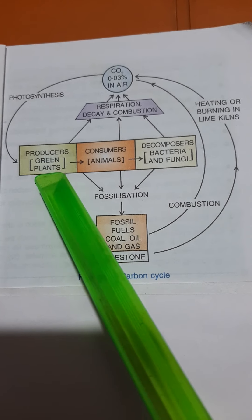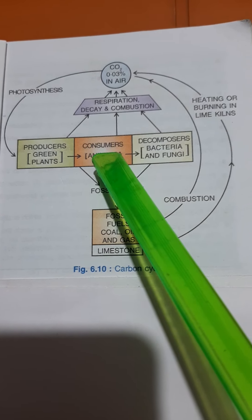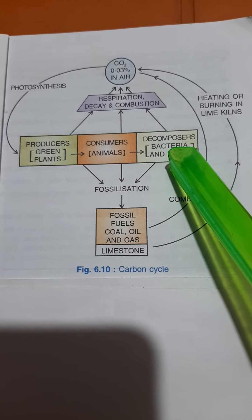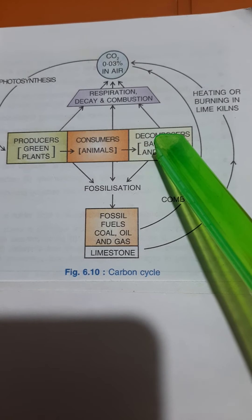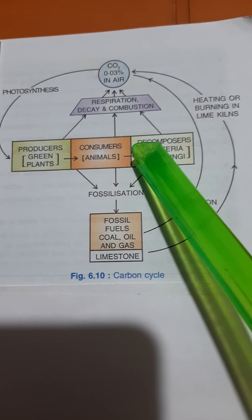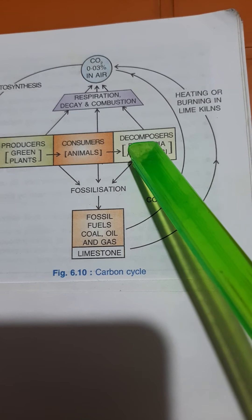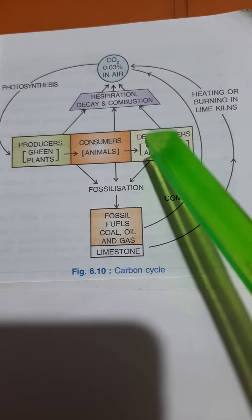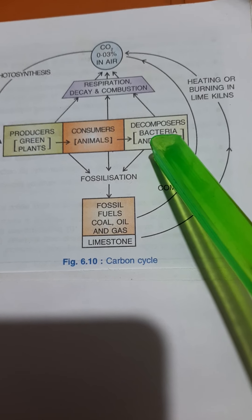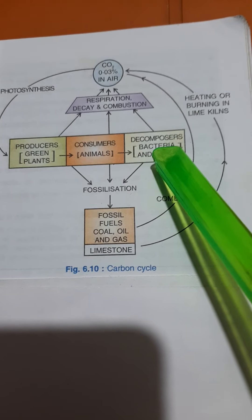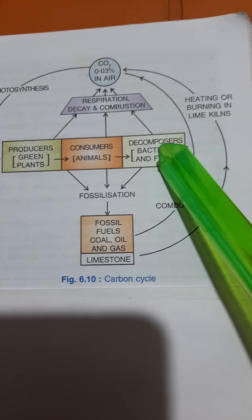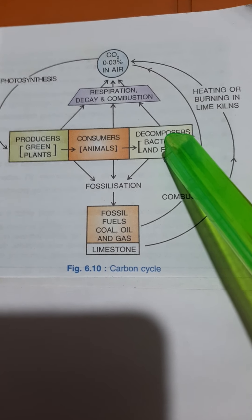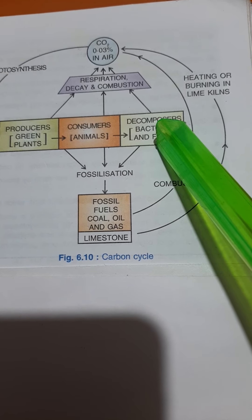When producers, consumers, and decomposers undergo respiration, that is the time they oxidize the carbohydrates. The carbohydrates are getting oxidized in their cells, and what is being produced is energy and carbon dioxide. After respiration, the carbon dioxide produced is returned back into the air.